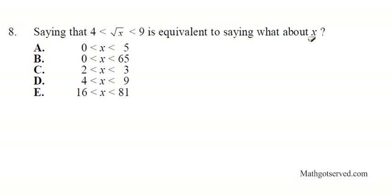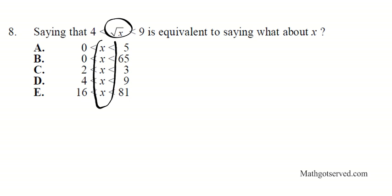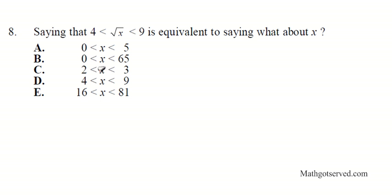So, 4 is less than the square root of x is less than the square root of 9 — what does that tell us about x? If you notice that the question has a square root in it, but the answer options don't. So in order to get our expression in a form similar to the answer choices, we need to get rid of the square root.